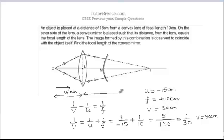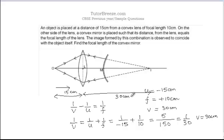That means the image is going to be formed at a distance of 30 cm from the lens. The mirror placed here is not refracting the light. So if the mirror was not present, light would have travelled straight along this path and reached point i. This distance from L to i is the image distance, which is 30 cm. The question says that this distance here is 10 cm, and what we need to find is the focal length of the convex mirror.